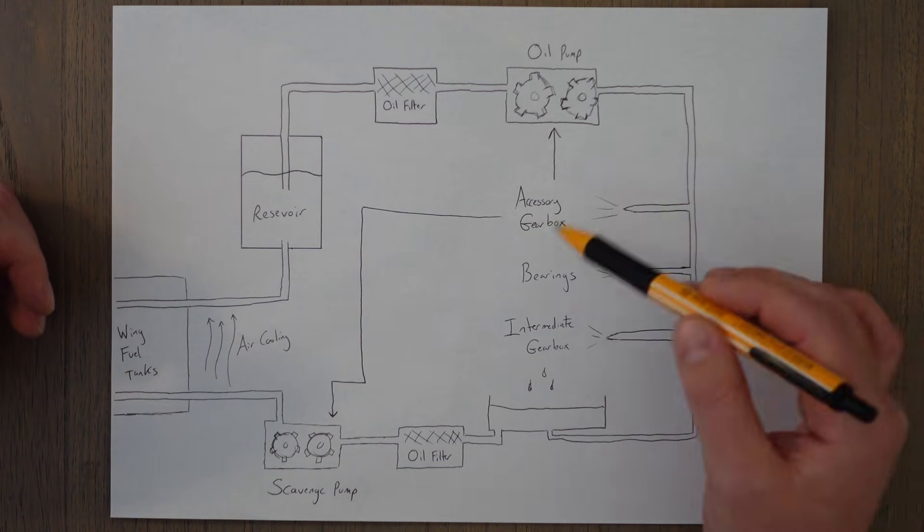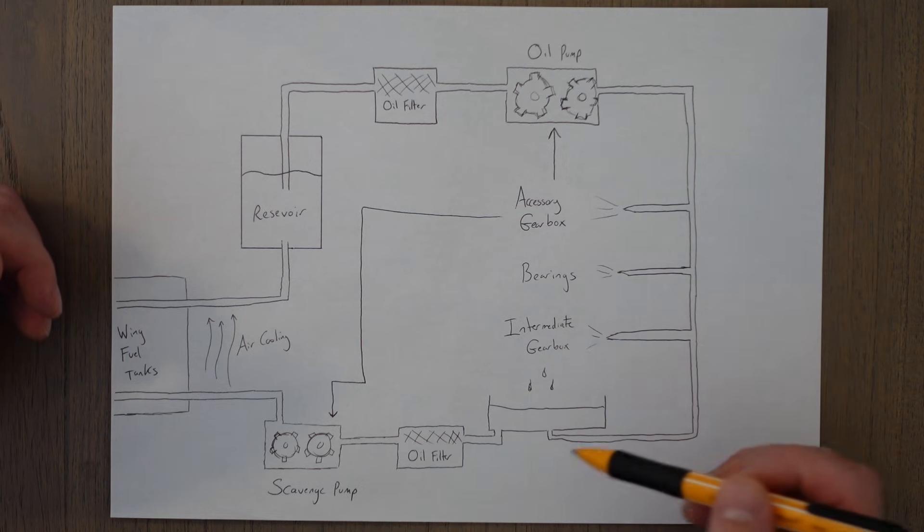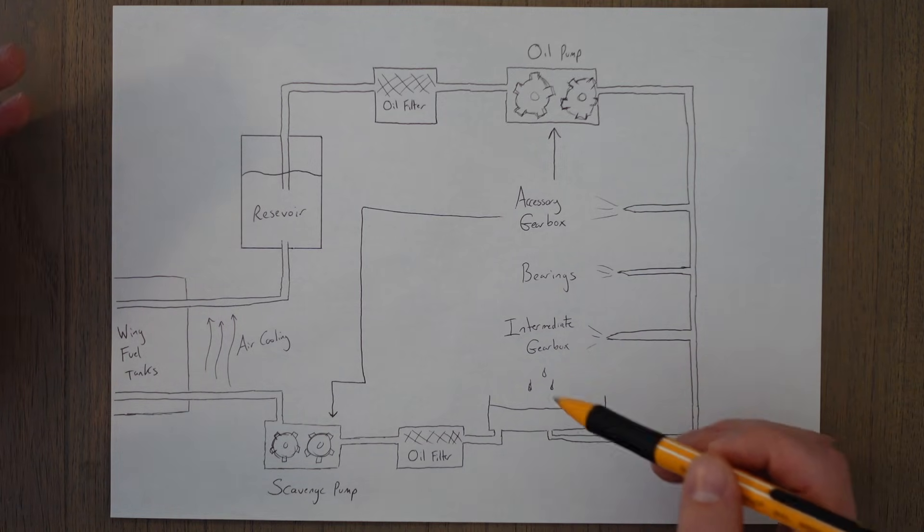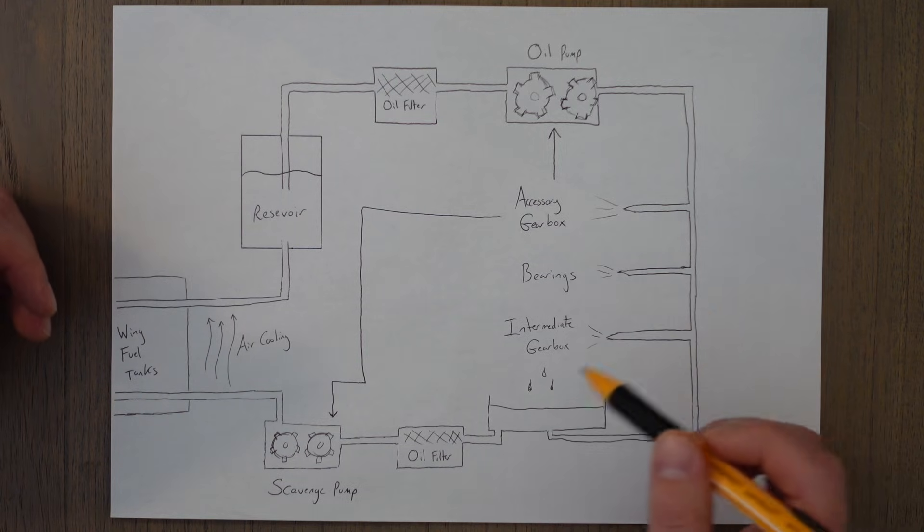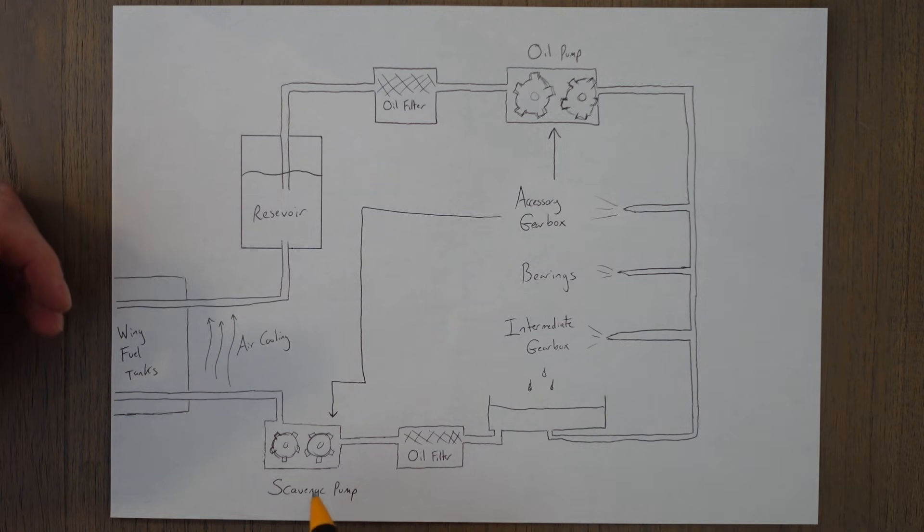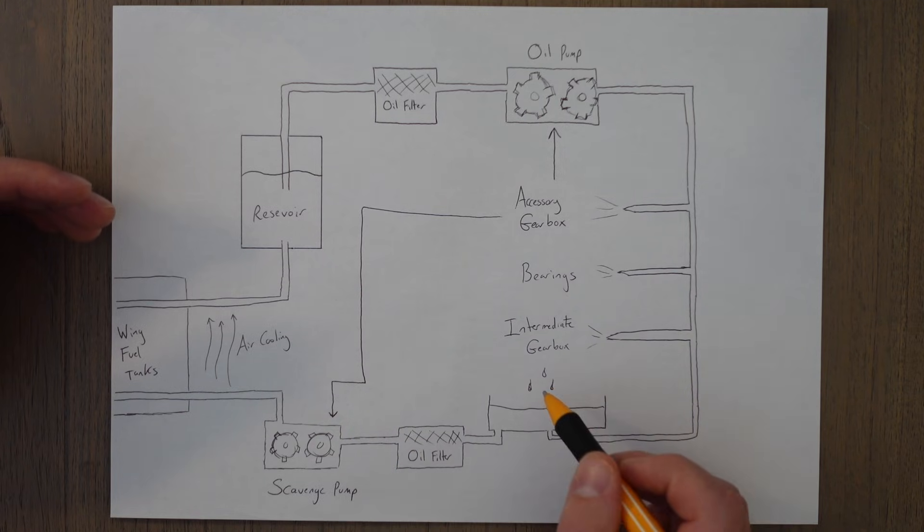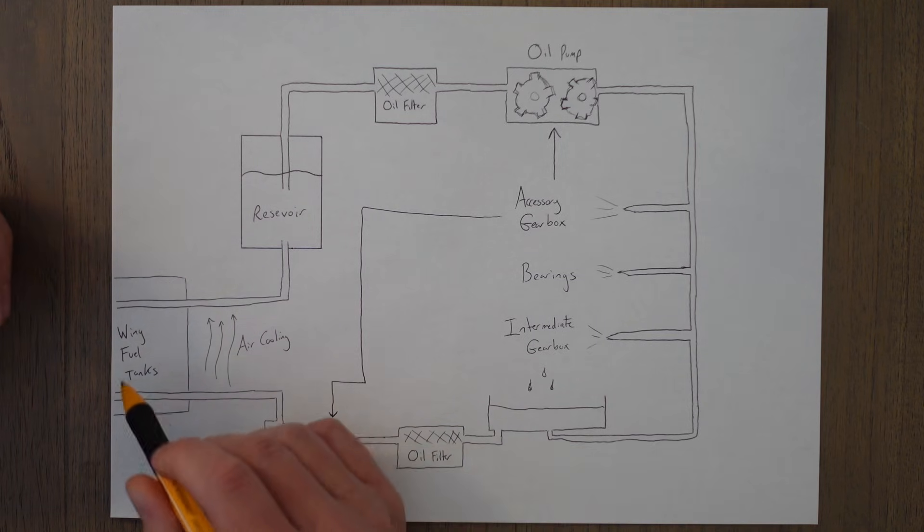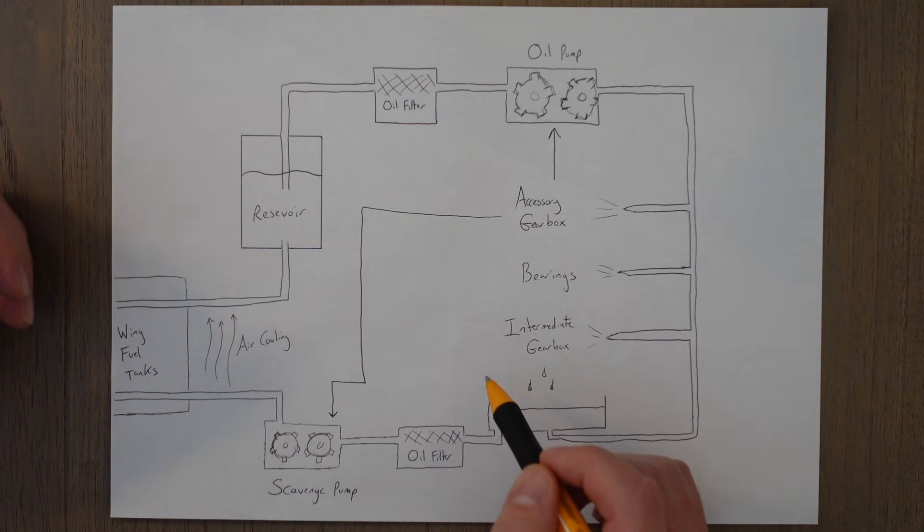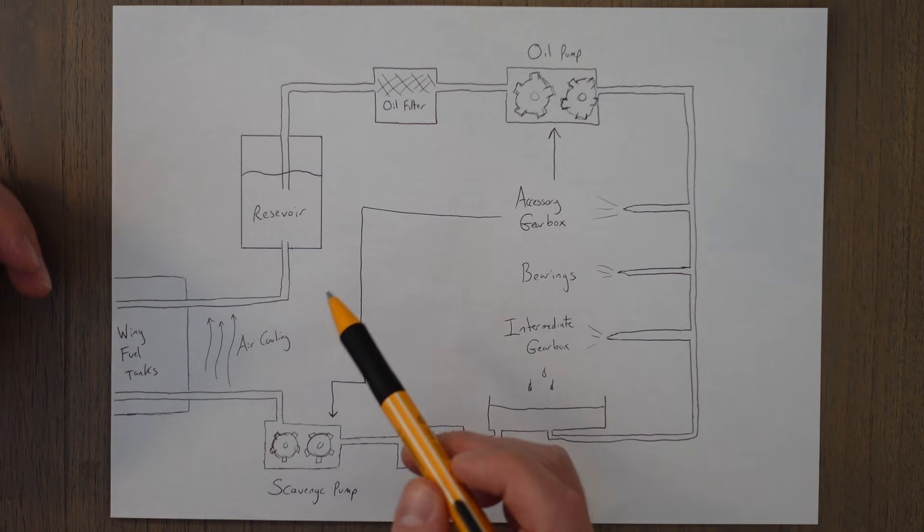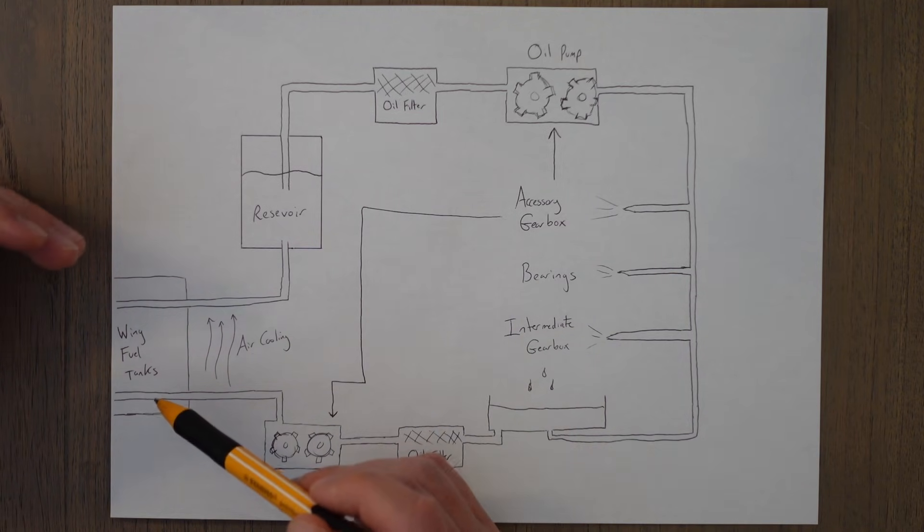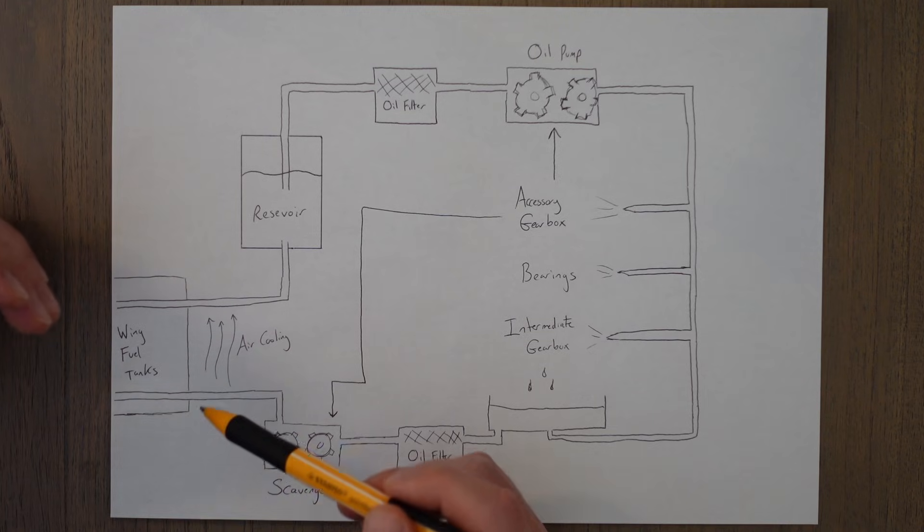After the oil has been used for cooling and lubricating these components, it is collected in a sump, which is basically a bucket. And then a scavenge pump, which again is run off the accessory gearbox, pulls the oil out of this bucket via another filter, and then it starts to send it back towards the reservoir. But before it reaches the reservoir, it goes through a process of cooling that oil back down.